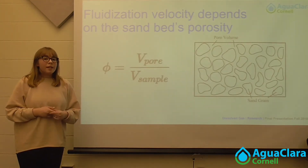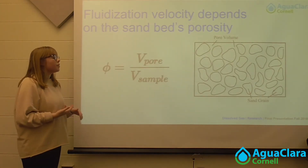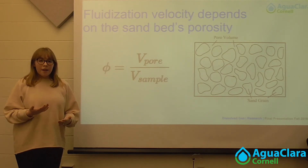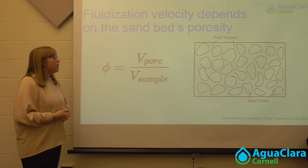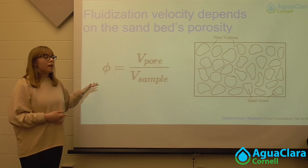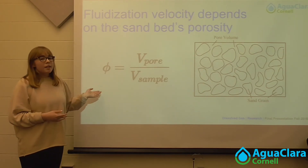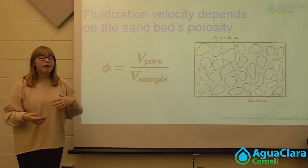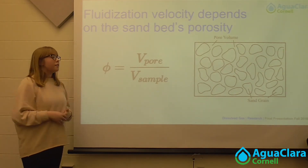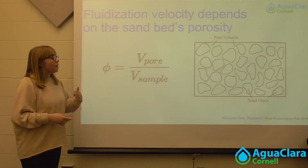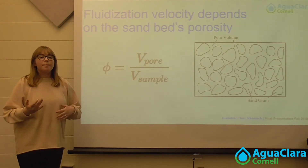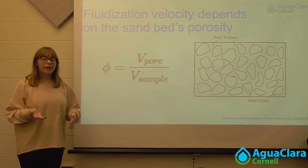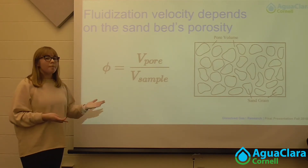In order to determine the fluidization velocity of the sand, we needed to determine the porosity, because fluidization velocity is dependent on porosity. This formula explains that porosity is equal to the volume of the pore space — the space in between each sand grain — divided by the total volume. This basically tells us how much of the total volume is being taken up by the sand grains and how much is being taken up by water.